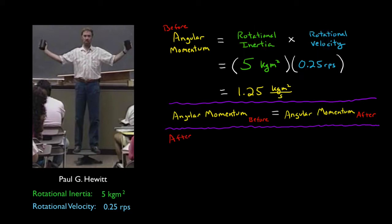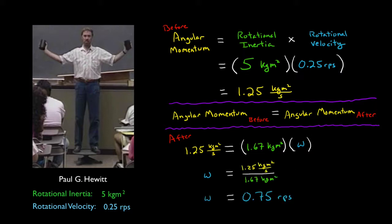Well, angular momentum before equals angular momentum after, which is 1.25, and that would equal the new rotational inertia, 1.67, times the new rotational velocity. Solve for that new rotational velocity, and you have 0.75 rounds per second.